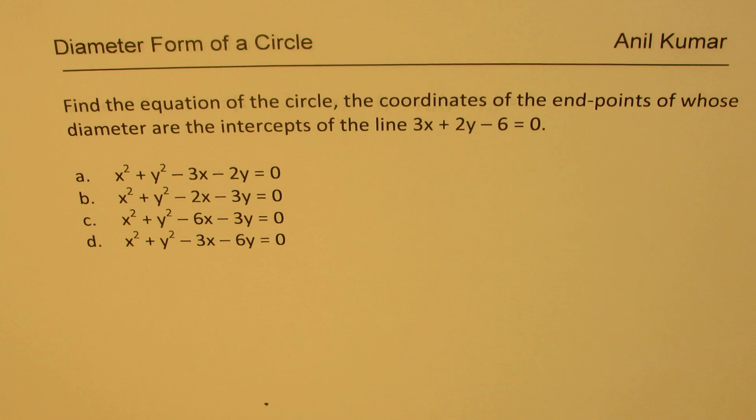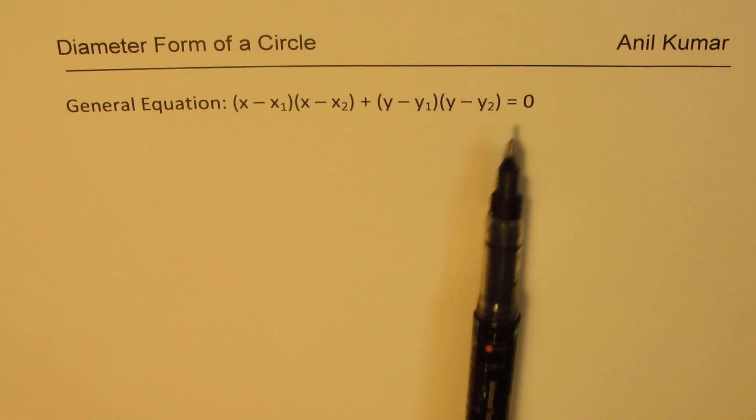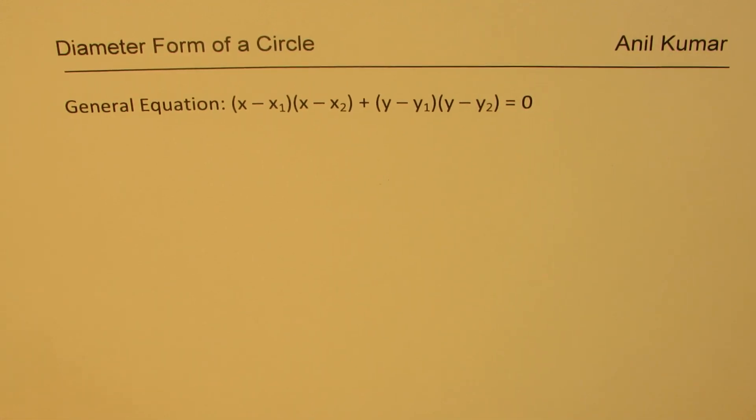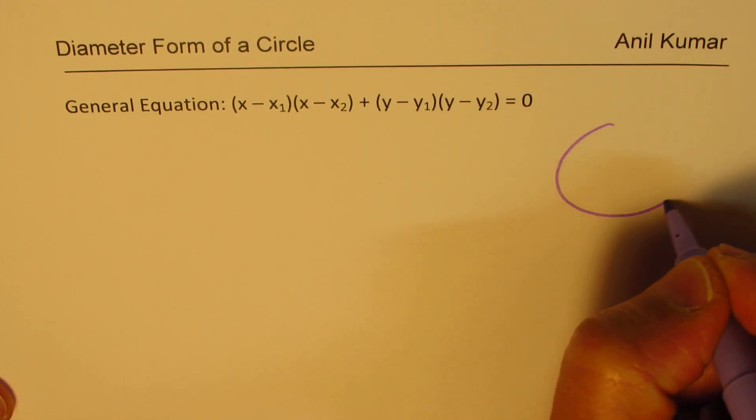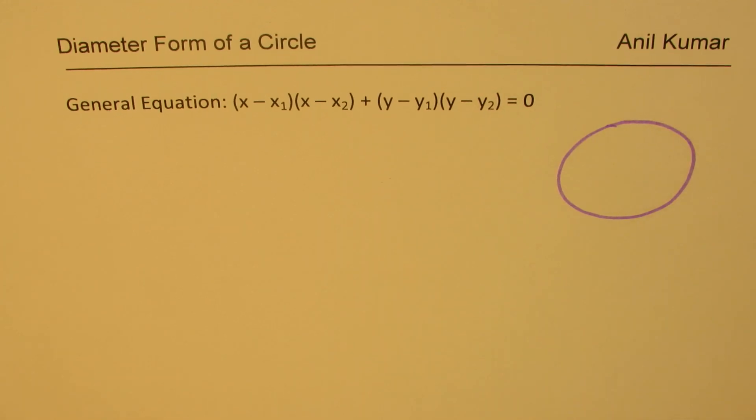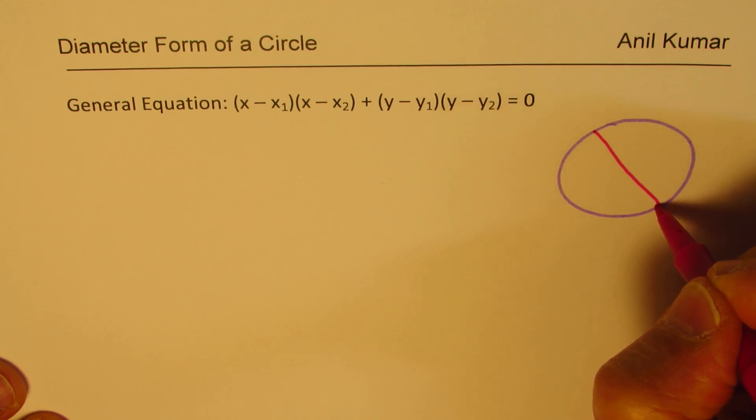Now before answering this question, let's try to understand the concept of finding equation of a circle when coordinates of its diameter are given. So we'll derive a general formula which looks something like this. So what we are seeing here is that if we take a circle and let us say we have diameter defined by two endpoints.